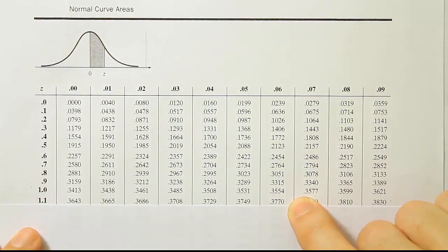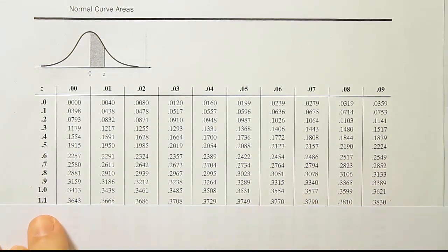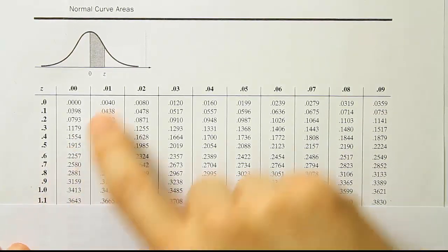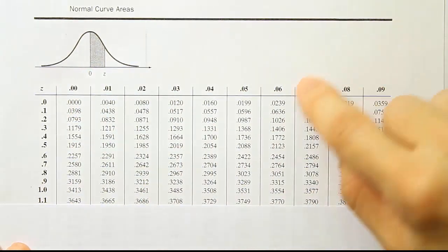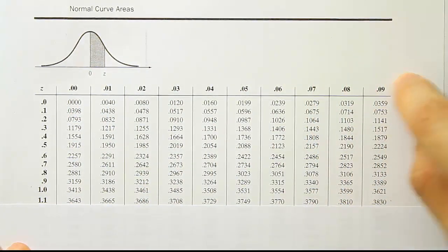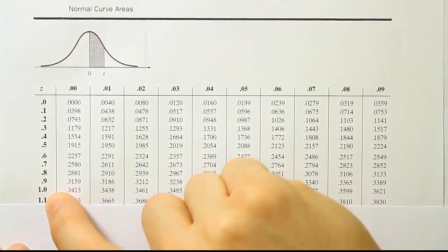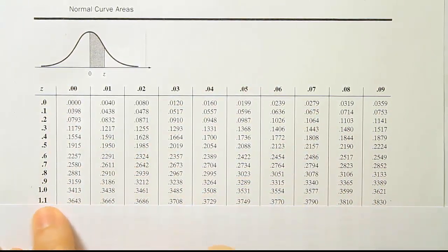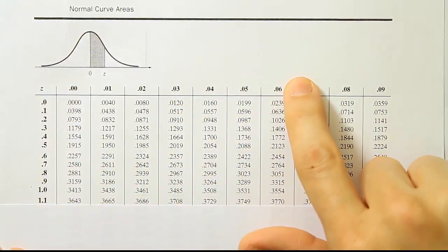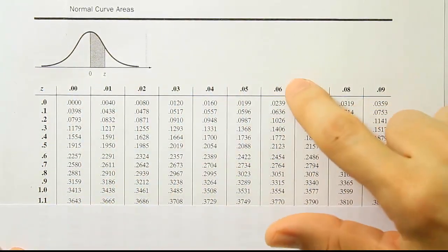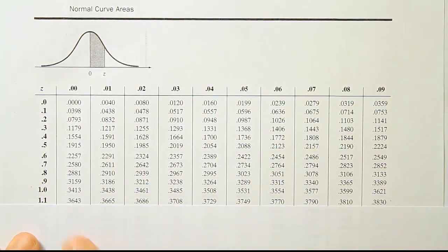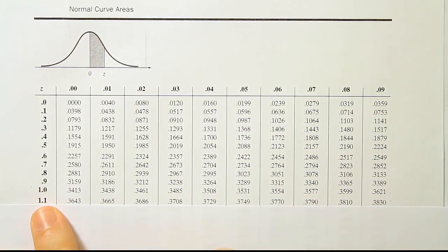So remember, your z-score has three numbers in it, right? It has a number in the ones place and then the tenths place. And then it has a number in the hundredths place. You find the hundredths place digit up here across the top. So the first two digits, the ones in the tenths place can be found here in the leftmost column. So 1.16, right? 1.16.